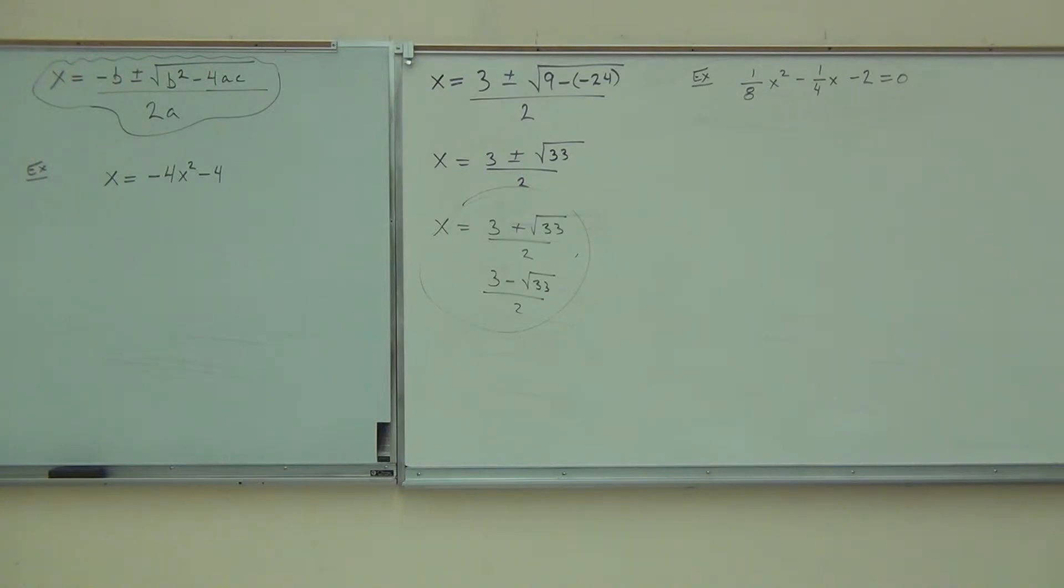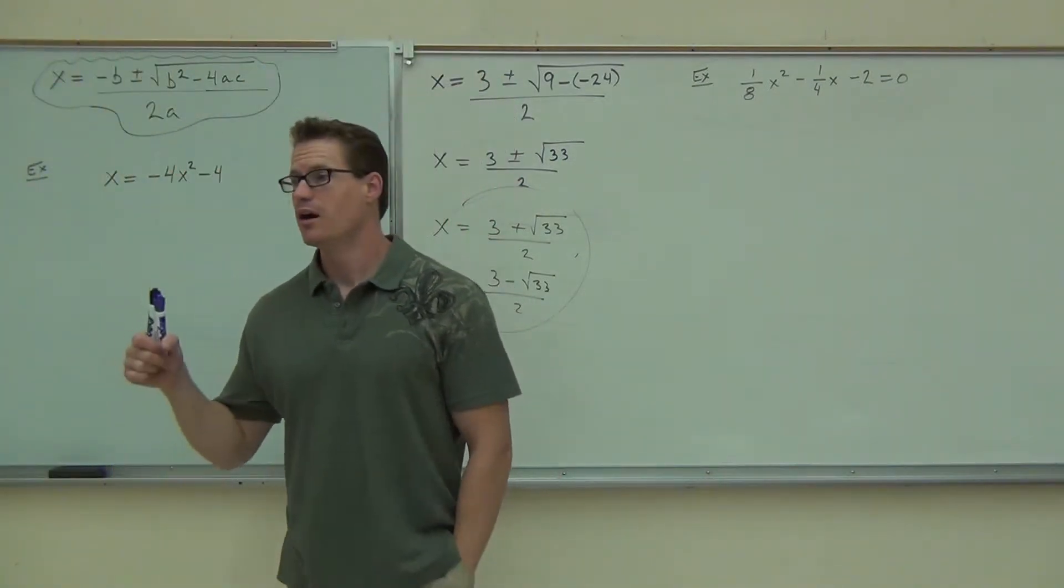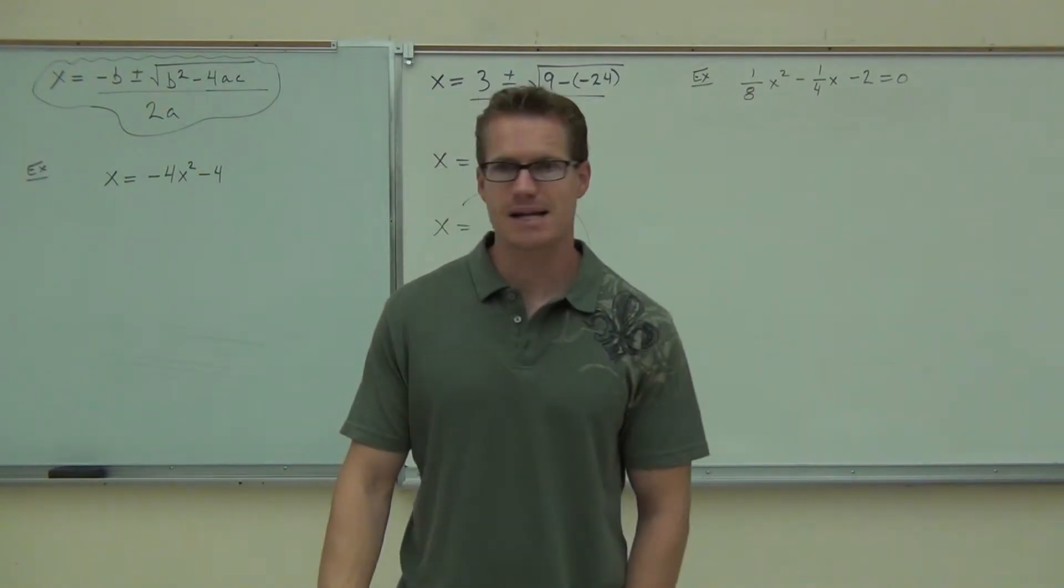We're making sure we have the correct form. That means it goes x squared, x, number. You're making sure that everything's on one side. You need to have a zero somewhere on one side of the equation if you're going to use a quadratic formula. You have to have a zero. If not, it's not going to work.